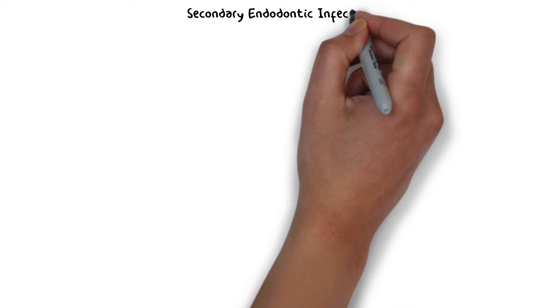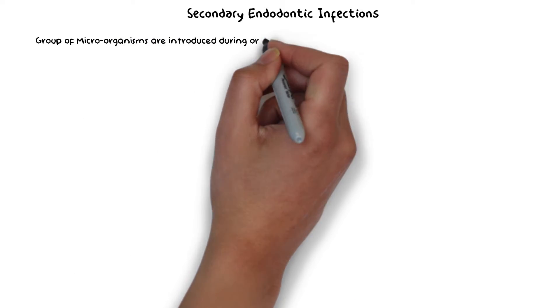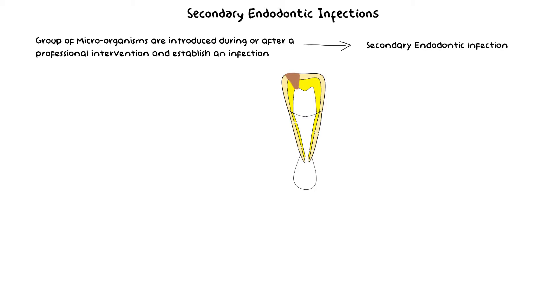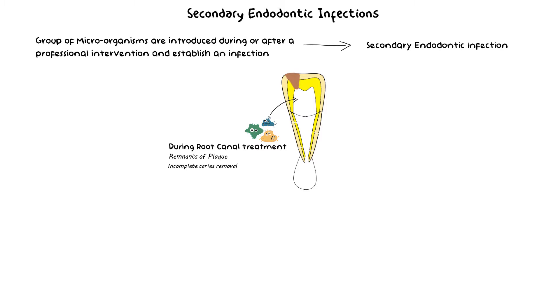Now we come to secondary and persistent infections, which we will discuss together as they are closely linked. Secondary infections are those caused by microorganisms that were not present in the primary infection but were introduced into the root canal system during or after a professional intervention. The entry of these microorganisms can occur via three routes: during root canal treatment, due to remnants of dental plaque or calculus, incomplete caries removal, leakage of rubber dam, contamination of instruments, or not using proper irrigation protocols.